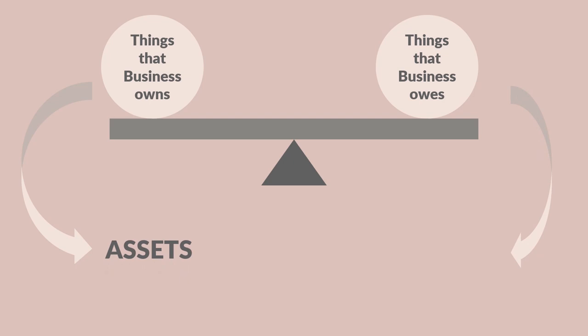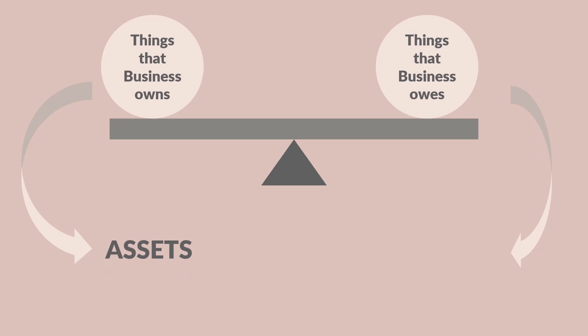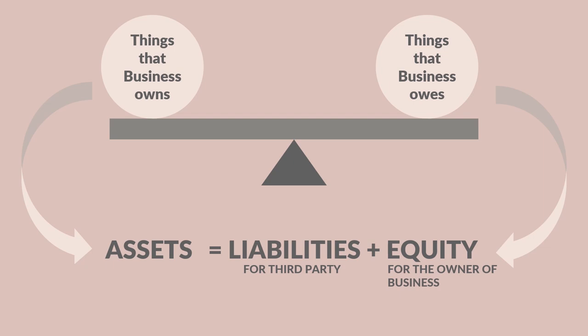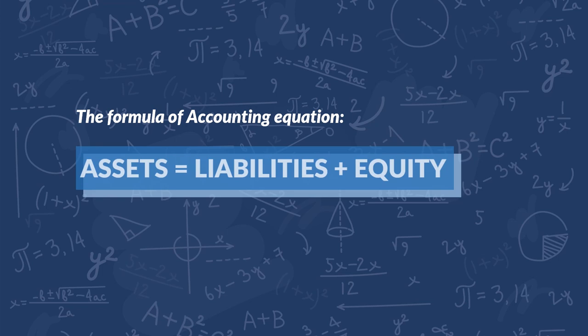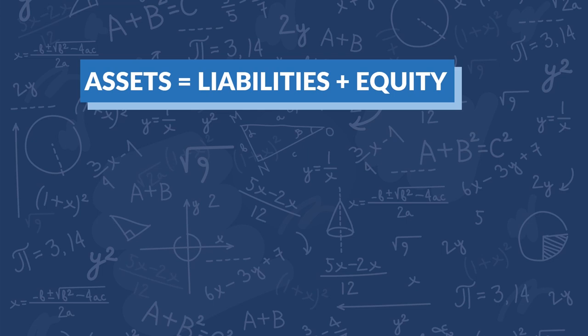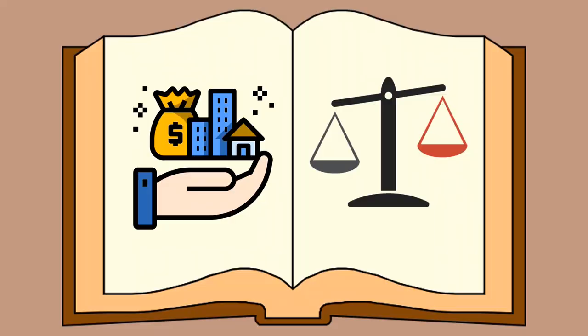The things that the business owns are its assets, and depending on what lenders we have — if we have third parties, we're going to have liabilities, and if it's the person who owns that business, we're going to have equity. So here we have the formula of the accounting equation: Assets = Liabilities + Equity. It's really super crucial for you guys to remember that this equation is always, always, always balanced.